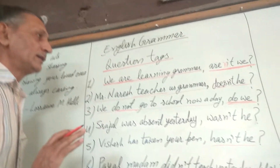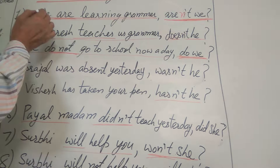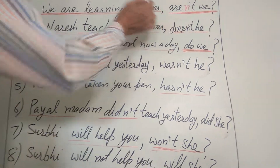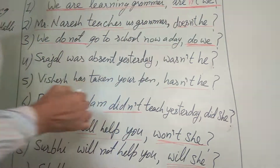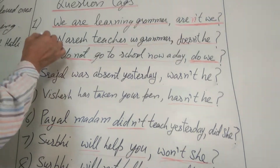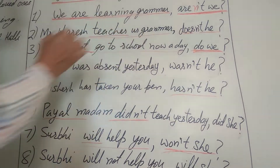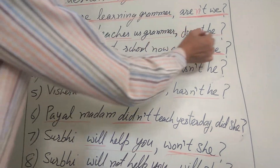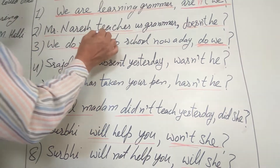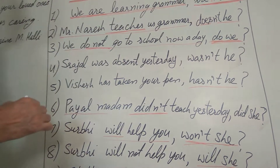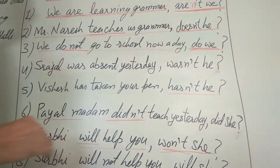Let's go for some sentences. 'We are learning grammar' — statement — 'Aren't we?' — question tag. 'Mr. Narais teaches us grammar' — 'Doesn't he?' — question tag. The statement is in present indefinite tense; the question tag is also in present indefinite tense.